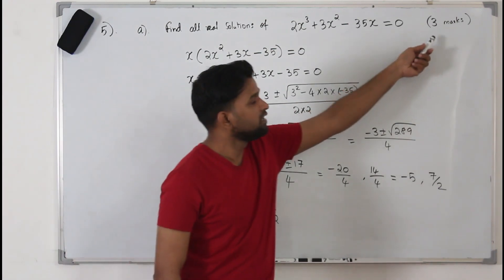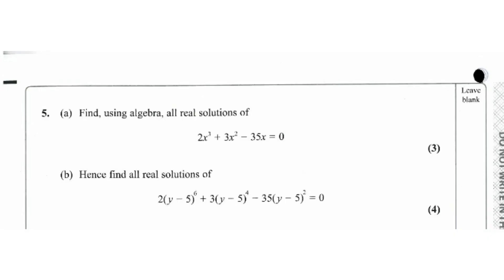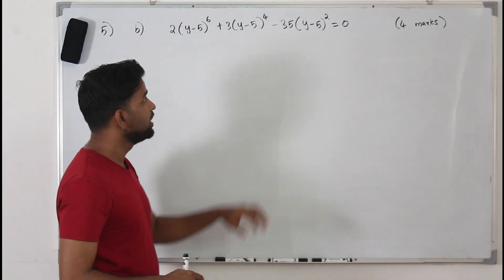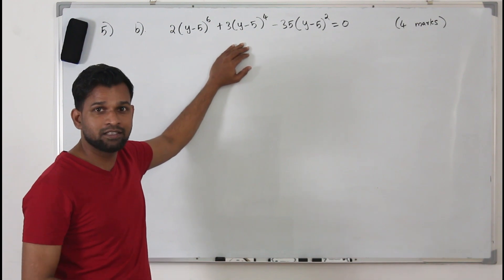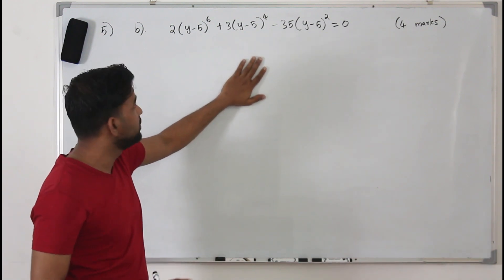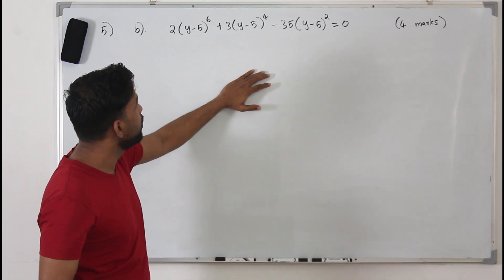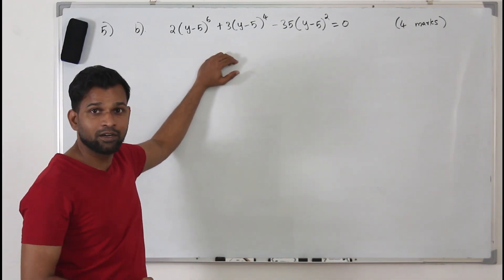Looking at Part B, we are given an equation and asked to find all real solutions again, for 4 marks. If you treat this as a separate question it gets you nowhere — you need to use the result from Part A. This equation has something to do with Part A.